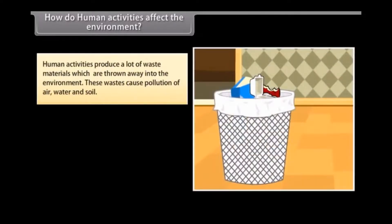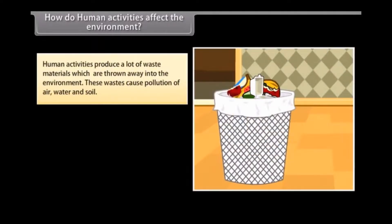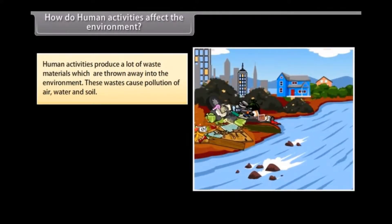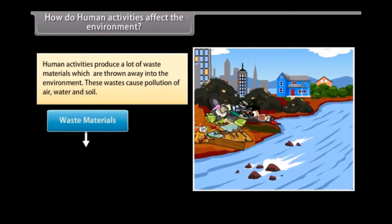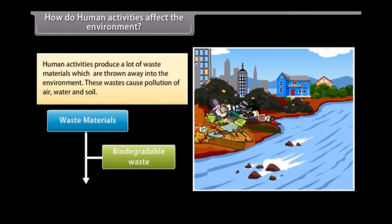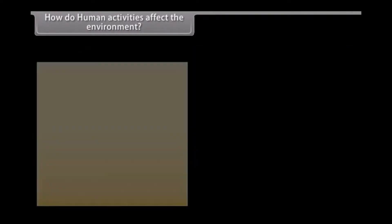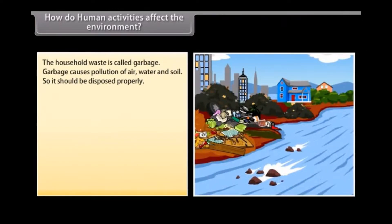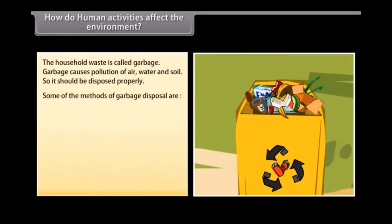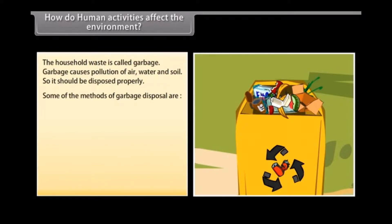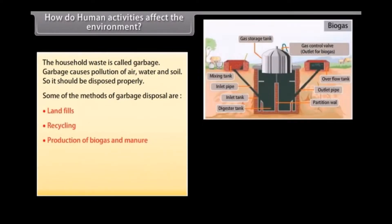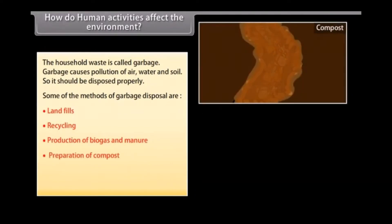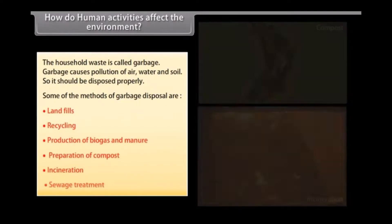How do human activities affect the environment? Human activities produce a lot of waste materials which are thrown away into the environment. These wastes cause pollution of air, water and soil. The waste materials produced are of two main types. They are biodegradable waste and non-biodegradable waste. The household waste is called garbage. Garbage causes pollution of air, water and soil. So it should be disposed properly. Some of the methods of garbage disposal are landfills, recycling, production of biogas and manure, preparation of compost, incineration, and sewage treatment.